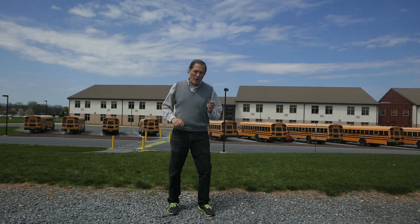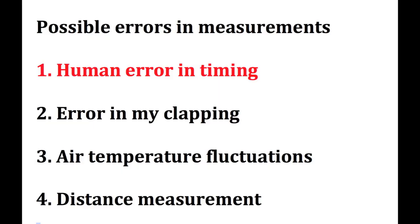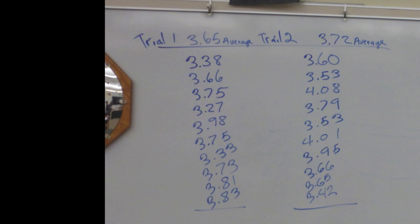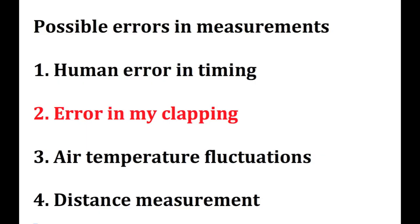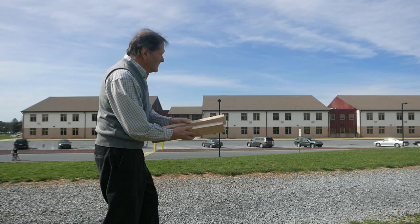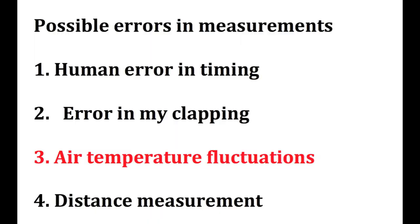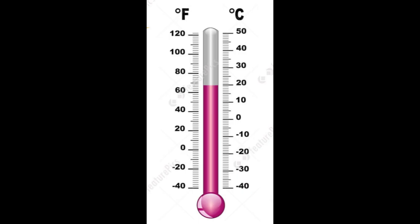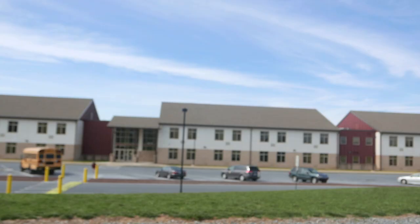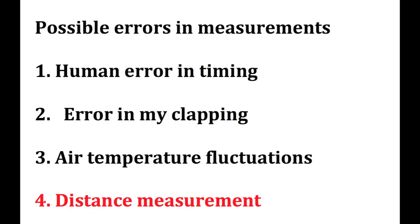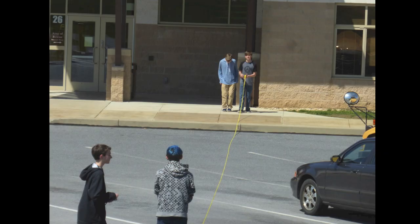We also came up with a list of possible errors. Human error in using the stopwatch — all these people were timing the same event, but we have all these different numbers. There may have been some error in my clapping; it does take some practice to get that rhythm going of clapping on the echo. We had no way of knowing whether the air temperature stayed consistent across the whole distance. A change of a few degrees would make a difference. Our distance may have been off — we were standing on a hill, and that's a little bit harder than measuring on level ground.